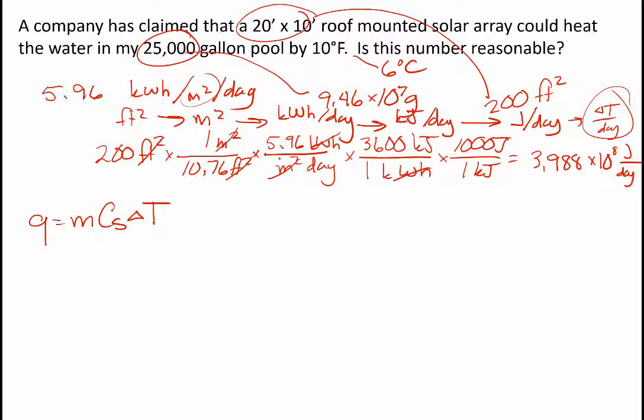I ran this through. I got 3.988 times 10 to the 8 joules per day. That seems really high. And let's see, it's going to be about 2 sig figs, let's say.